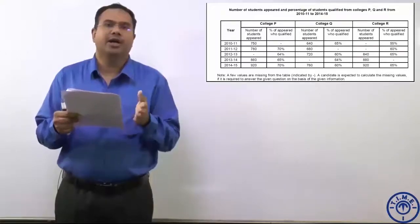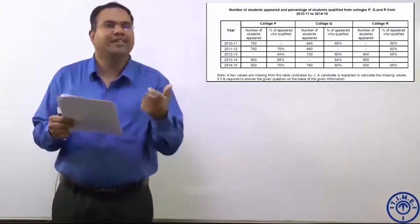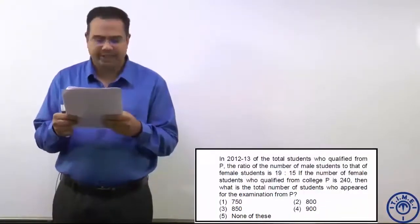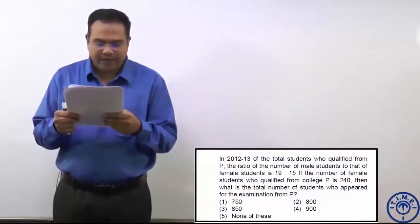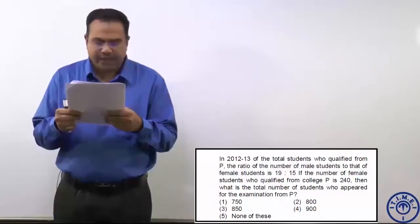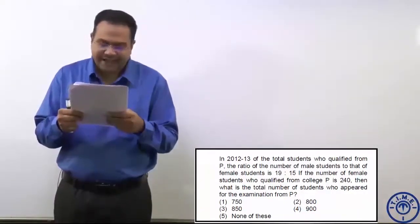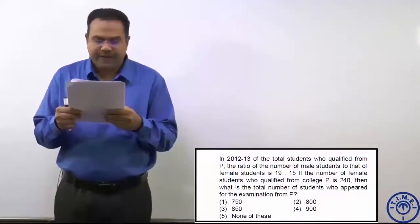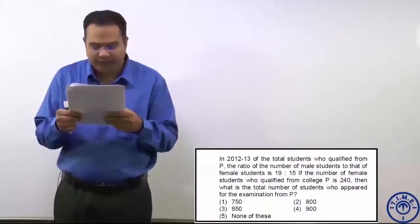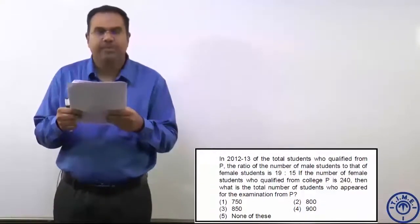So according to the information given in the question, the candidate has to find out the missing value if it is required to get the answer. Let us start with the first question. In 2012-13, of the total students who qualified from P, the ratio of number of male students to that of female students is 19 to 15. If the number of female students who qualified from college P is 240, then what is the total number of students who appeared for the exam from P?